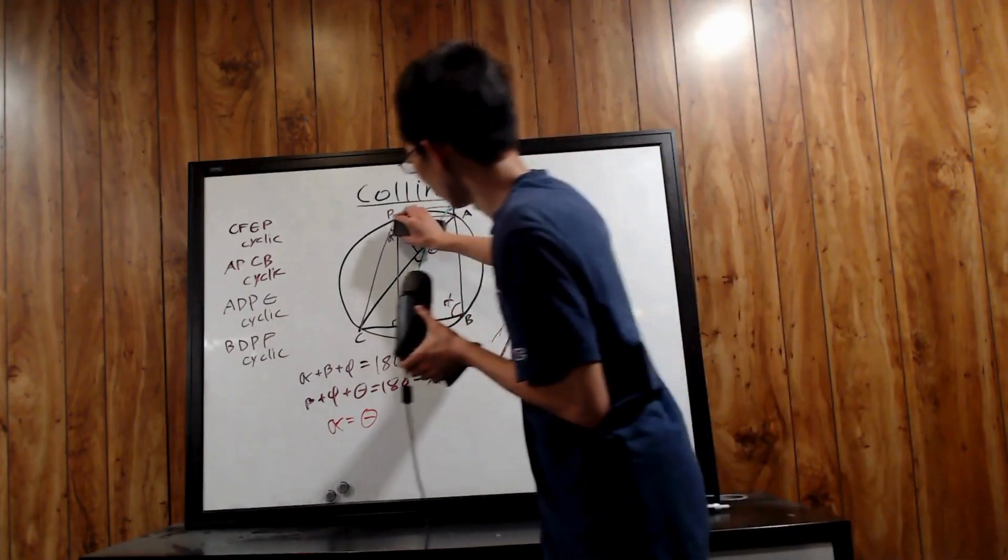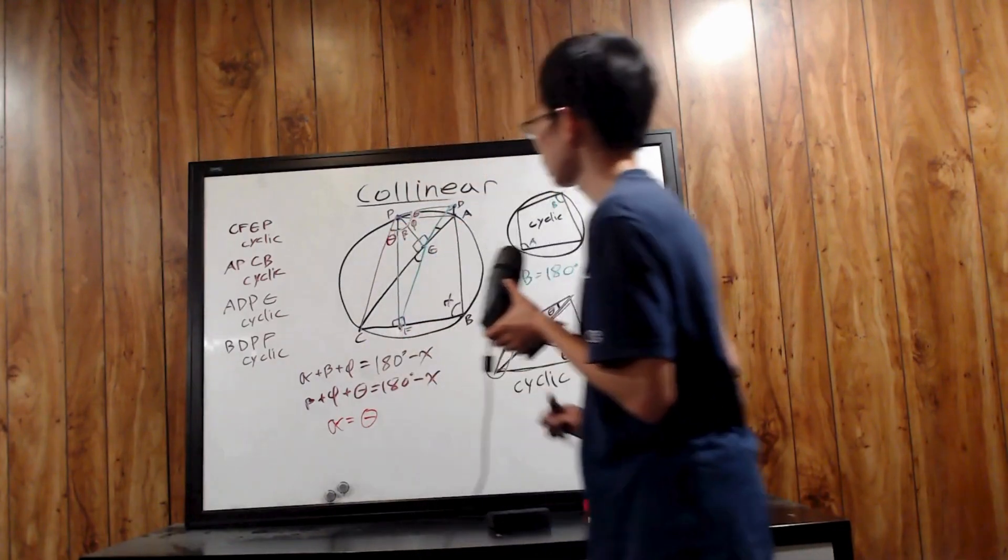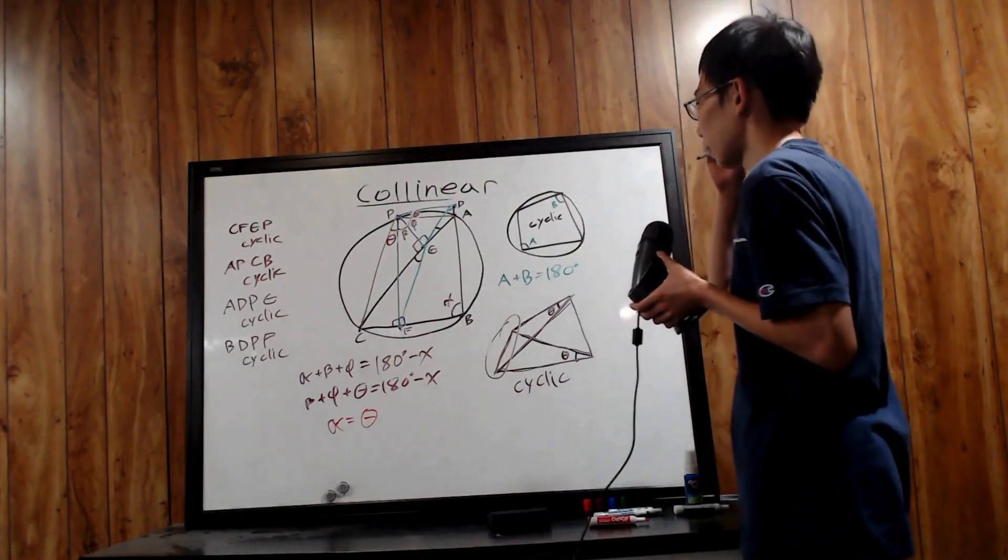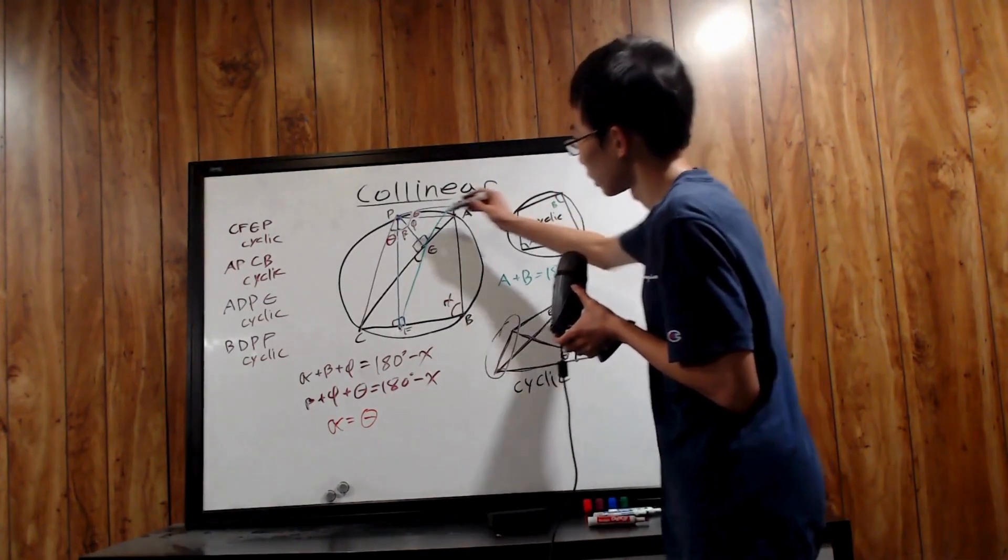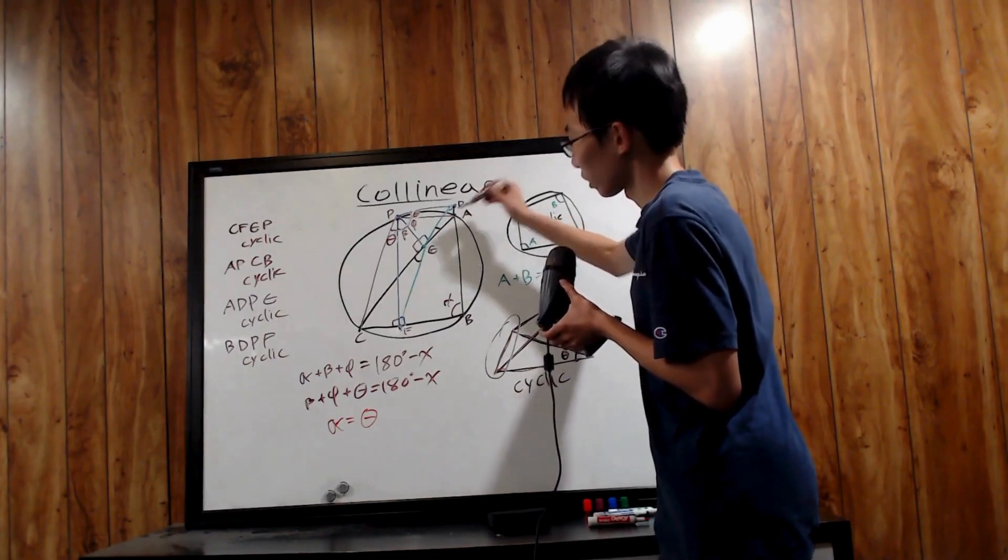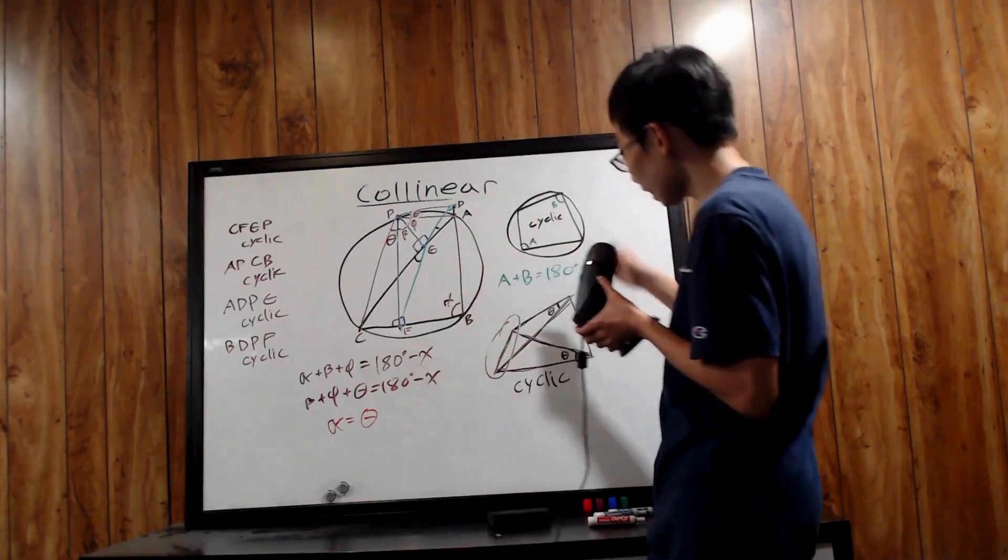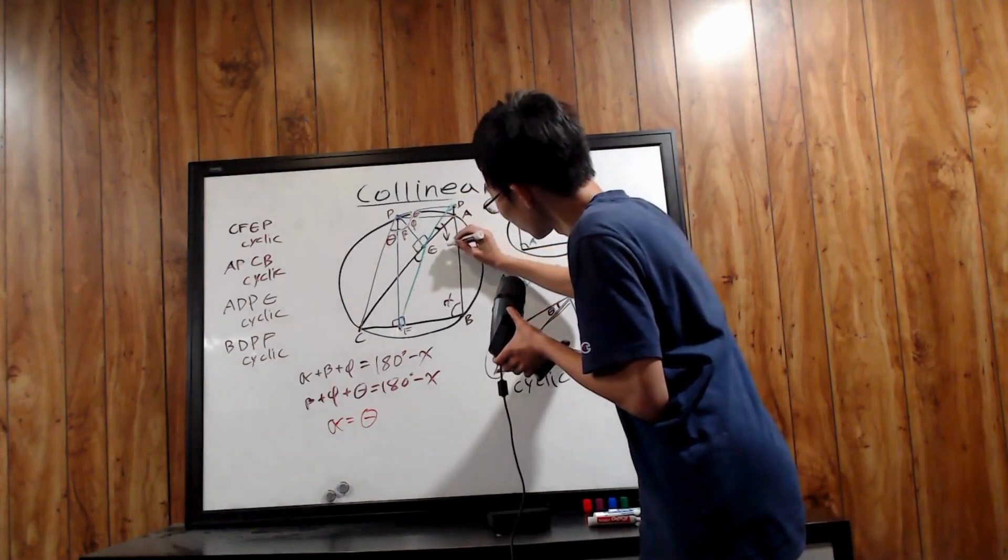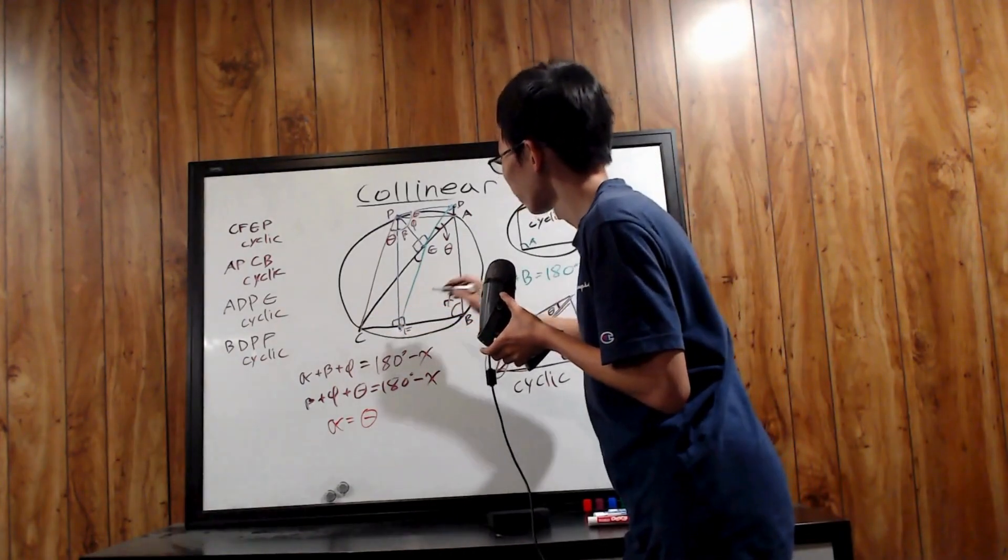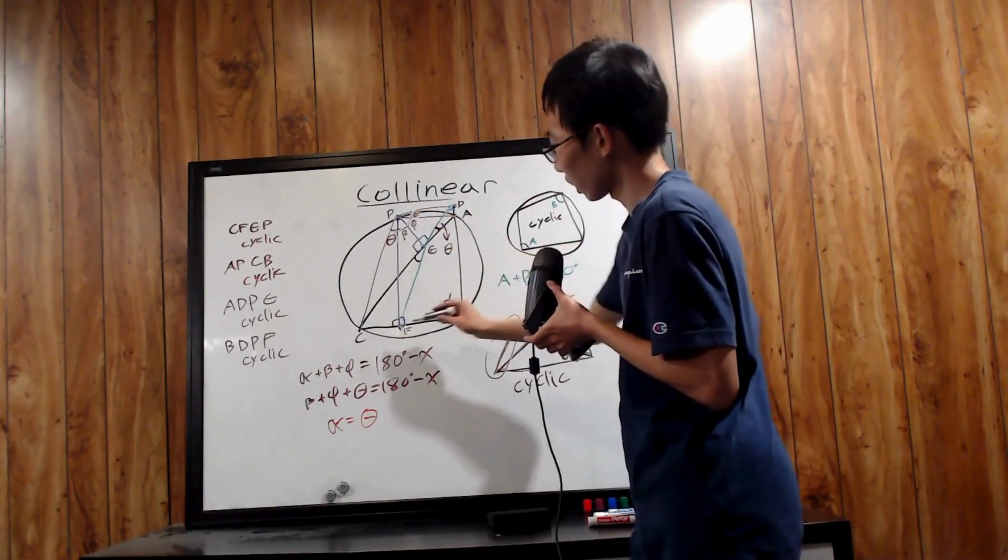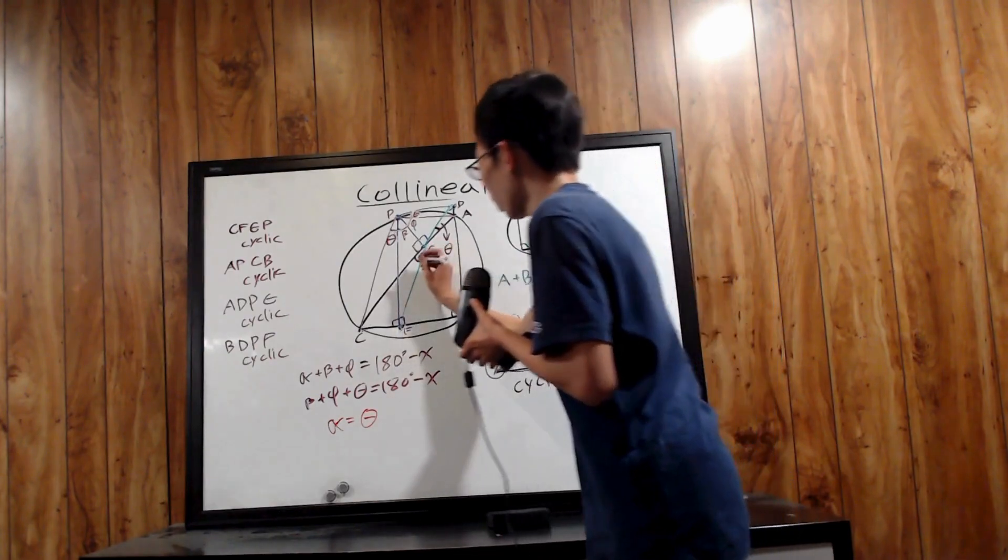So therefore, we can actually replace this alpha over here with theta, because it's literally equal with theta we just showed. Okay, that's great. Now, what's next? Well, notice that because ADPE is a cyclic quadrilateral, and notice that because theta is inscribed within edge AD, and this angle is also inscribed within edge AD, and it's cyclic. So this angle over here, this is just beta as well. Now, notice cyclic quadrilateral CFEP. Notice that theta is inscribed within CF, and also this angle here is also inscribed within CF. Thus, this is also theta.